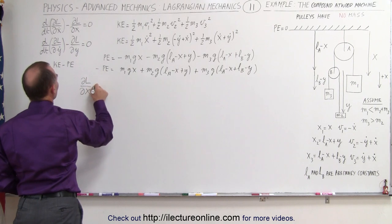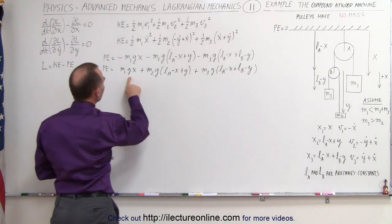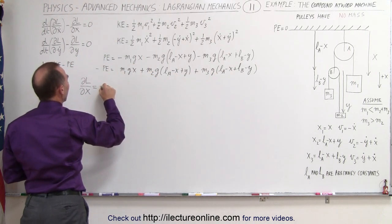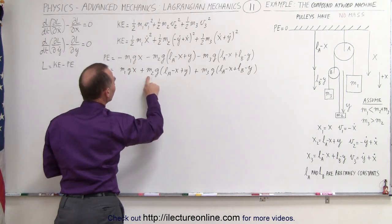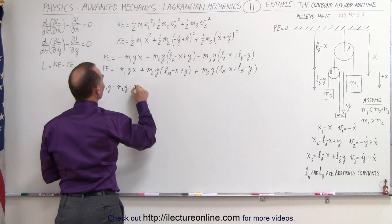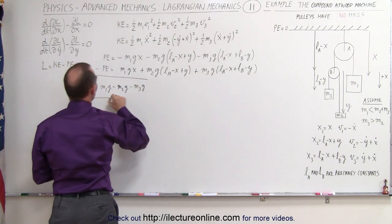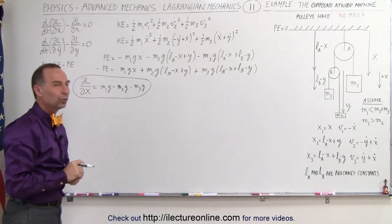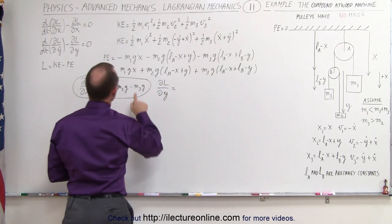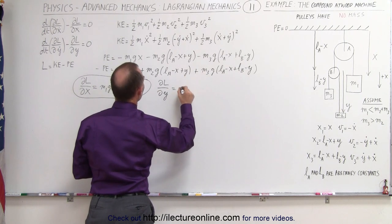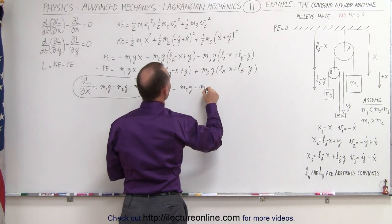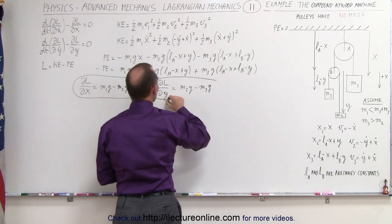Taking the partial of L with respect to x: we get M1·g from the M1 term, a minus M2·g from the M2 term (coefficient of x is negative), and a minus M3·g from the M3 term. So ∂L/∂x = M1·g minus M2·g minus M3·g. Taking the partial of L with respect to y: we get plus M2·g from the M2 term and minus M3·g from the M3 term, so ∂L/∂y = M2·g minus M3·g.